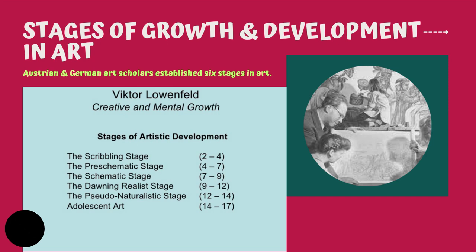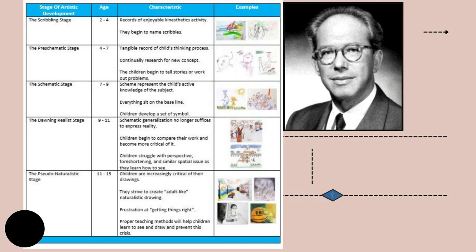Number two is the pre-schematic stage, that is four to seven. Number three is the schematic stage, that is seven to nine. Number four is the dawning realism stage, that is nine to twelve. Number five is the pseudo-naturalistic stage, that is twelve to fourteen. Number six is adolescent art, that is fourteen to seventeen.